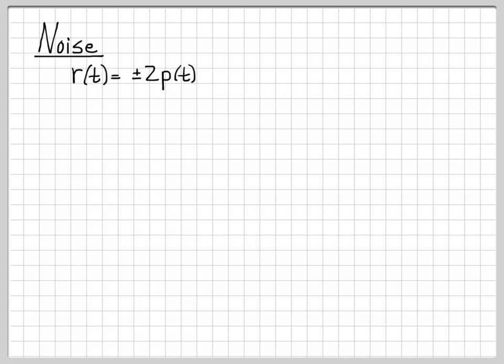That's a naive scenario — in the real world, we always have some type of noise. So let's bring in noise to make this interesting. The received signal is going to be plus or minus 2P(T) plus N(T). We've introduced what we call a Gaussian random process for the noise term N(T).